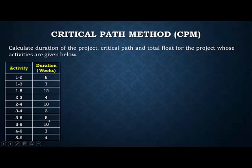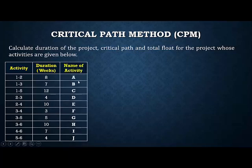Similarly, each activity and its duration is given in the next column. To solve this problem easily, we add another column giving the name of each activity. For example, activity A goes from node 1 to 2. Node 1 to 3 represents activity B, which takes 7 weeks. The interrelationship between nodes and the names of all activities are listed.